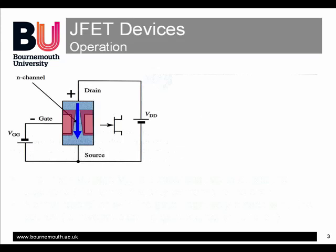In normal operation, a signal is applied to the negatively biased gate. As the signal voltage varies the gate bias, it will in turn vary the depletion layer and hence control the flow of current through the channel. If you're unsure about this, please check out the related pack on JFET operation.